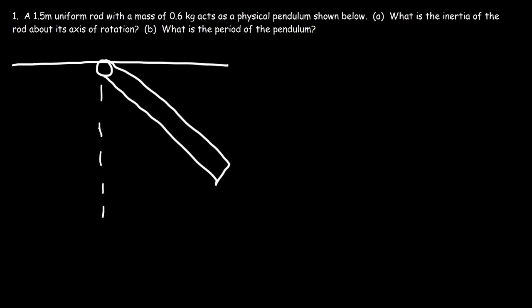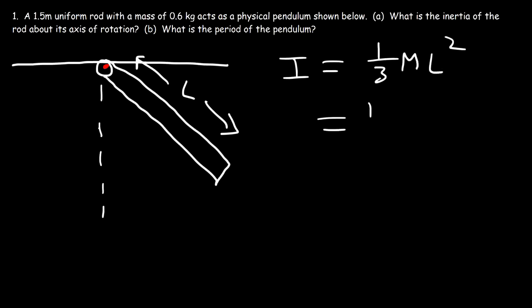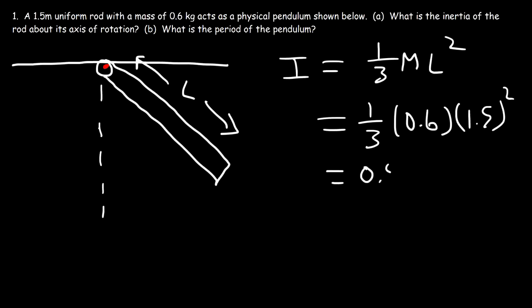What is the inertia of the rod about its axis of rotation? It rotates about this point. L is the length of the rod, and to calculate the inertia of a rod where the axis of rotation is at the end of the rod, it's 1/3 mL². So that's 1/3 times the mass of 0.6 kilograms and the length of 1.5 meters. 1.5 squared times 0.6 divided by 3 gives us an inertia of 0.45 kg·m².